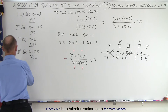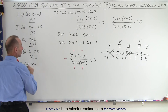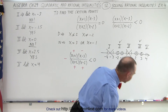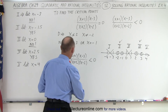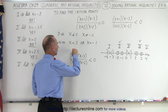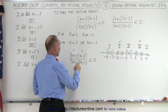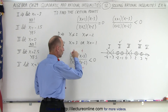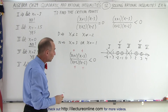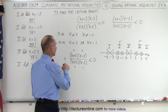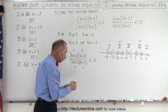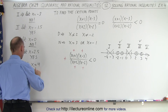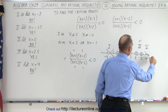For region five, let's pick x = 4. Four plus one is five, positive. Four minus three is one, positive. Four plus two is six, positive. Four minus two is two, also positive. Every binomial is positive, so the overall fraction is positive, and a positive number cannot be less than zero. Therefore region five is not part of our solution.